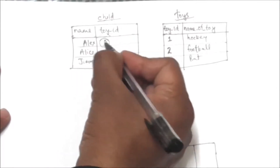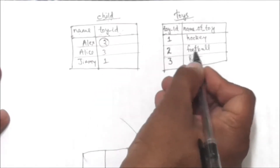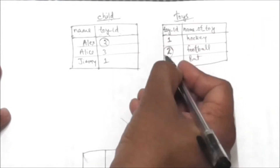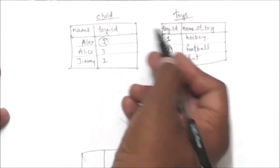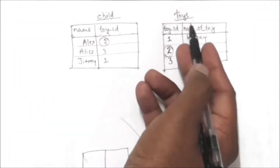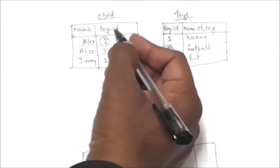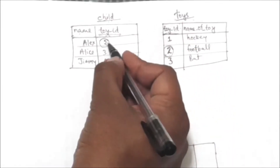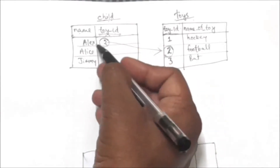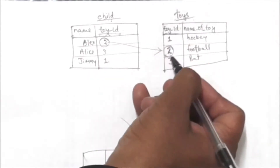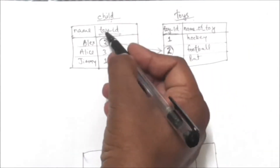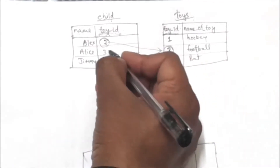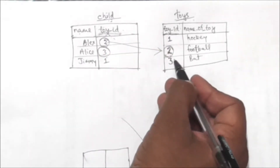Now see this first row of the child table — the value of toy_id is 2. And in this row of the toys table, the value of toy_id is also 2. So we are performing natural join, and these two tables child and toys will be joined by the common column toy_id. This row of the child table will be joined with this row of the toys table because the value of the common column toy_id is the same.